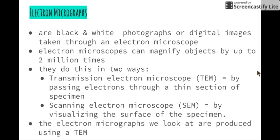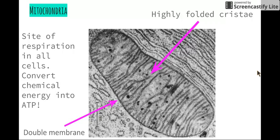Electron microscopes can magnify objects by up to two million times, and they can do this in two ways. We can either have a transmission electron microscope, whereby electrons are passed through a thin section of a specimen, or a scanning electron microscope, where we can create visualizations of the surface of a specimen. The electron micrographs we are about to look at are produced using a transmission electron microscope.